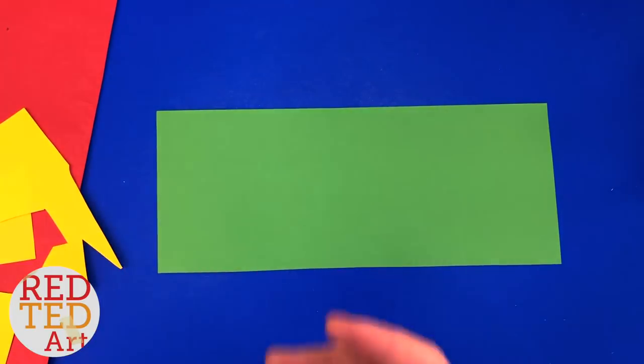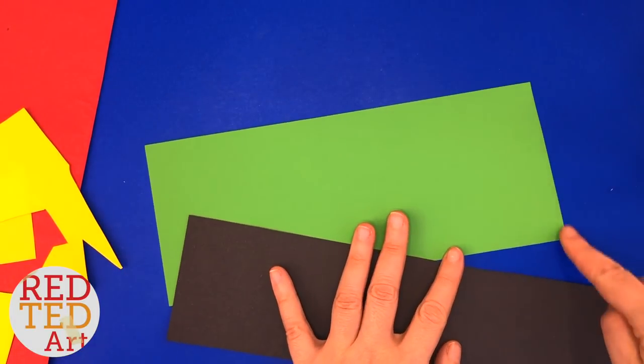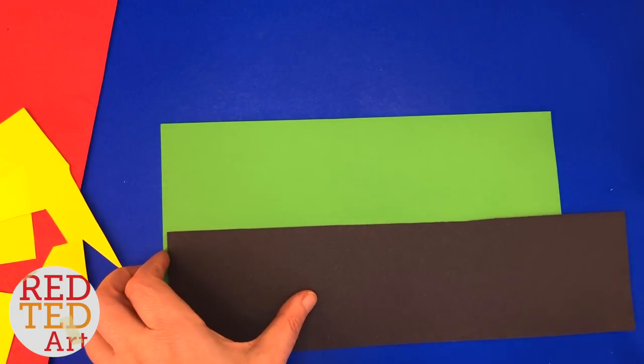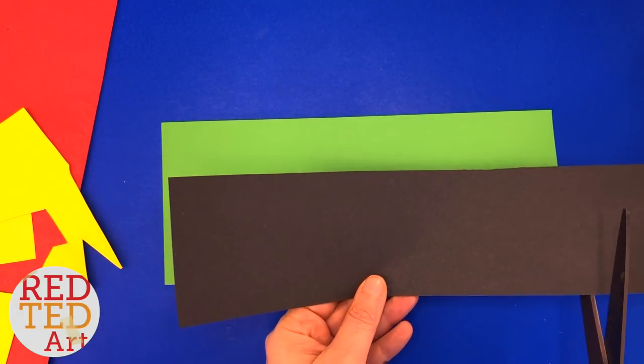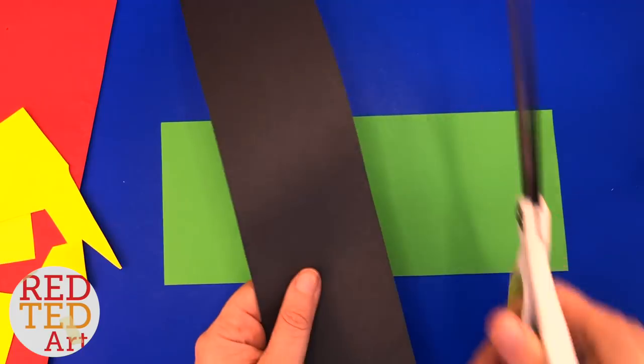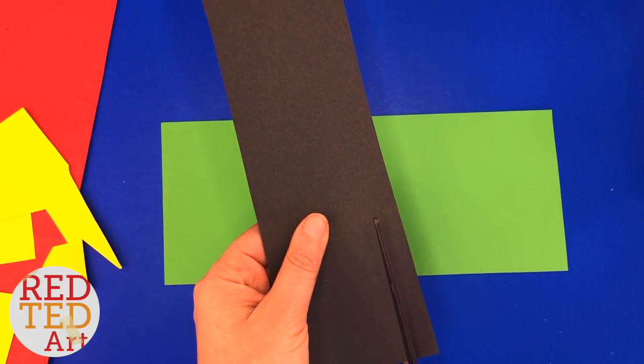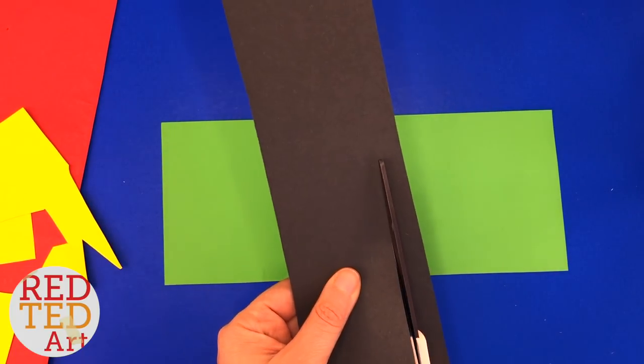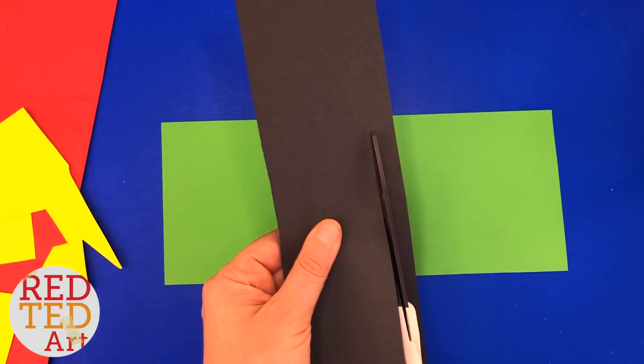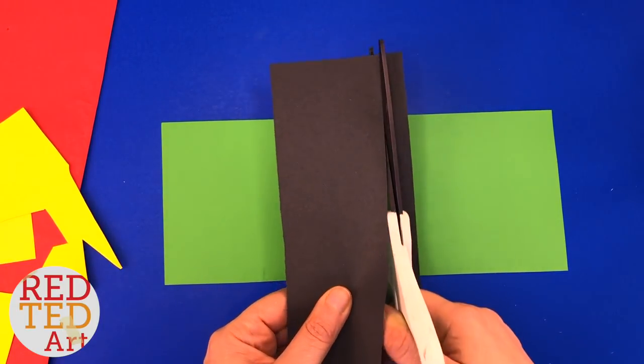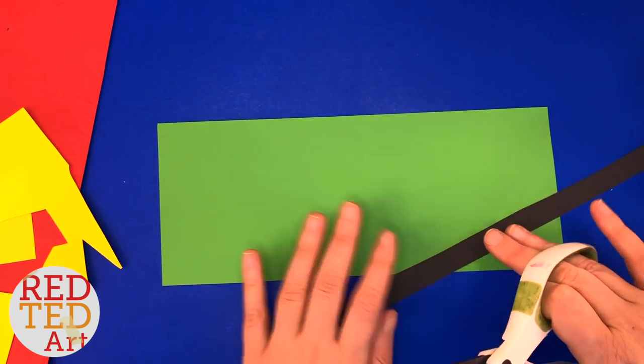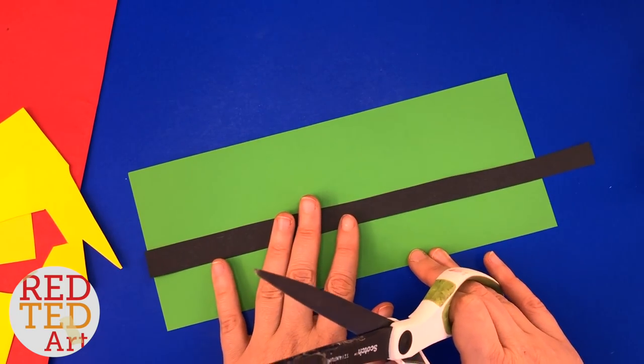So we will need a belt. Look, this line isn't very straight, but it still works, it's fine. So we need a line that goes all the way. I'm going to make it slightly thinner than the Santa's belt, because I also want to add some buttons to the ELF. So let's have a look. I think that's good.